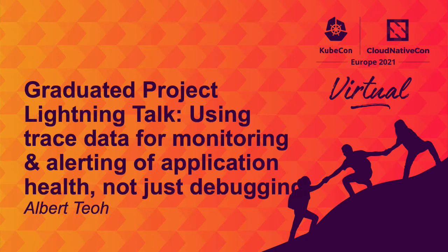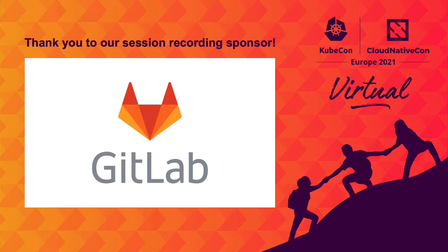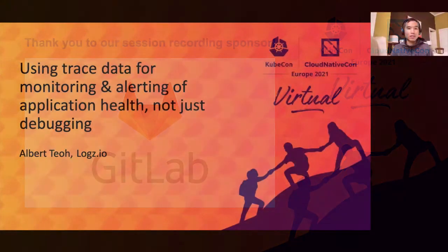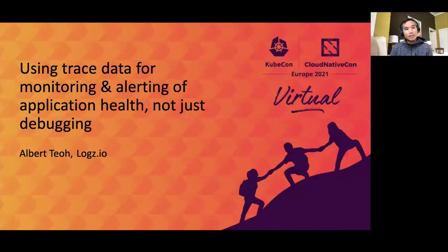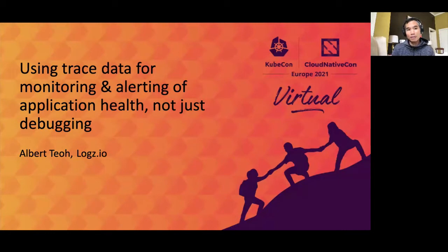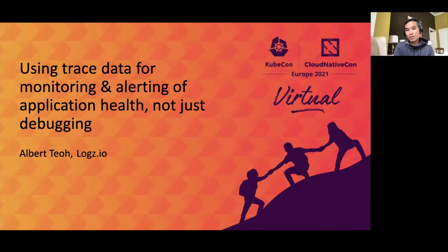Hi everyone, my name is Albert and today I'd like to talk to you about using your trace data for monitoring and alerting of application health and not just for debugging. If you're already using a distributed tracing solution like Jaeger, hopefully this will give you an appreciation for the additional value you could gain from your span data without adding more metrics instrumentation. And if you're new to distributed tracing, hopefully this will give you some motivation to start instrumenting your services and take advantage of the application health monitoring you could get for free along with the trace data.